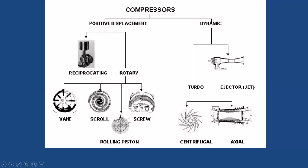When centrifugal compressors are used, they operate in stages — typically 10 to 15 stages are required to achieve the required pressure ratio even in air-conditioning applications. Their main advantage is providing more flow rate, which is a major requirement of air-conditioning systems where high mass flow rate of refrigerant is needed due to larger tonnage capacities. Centrifugal compressors are mainly preferred for air-conditioning applications, while rotodynamic compressors are rarely found in refrigeration applications.